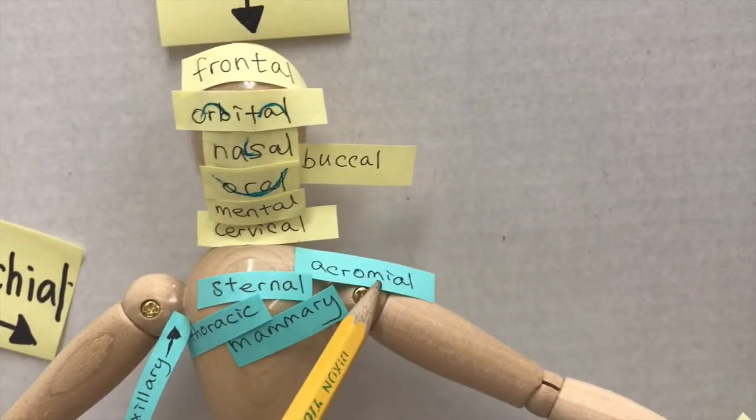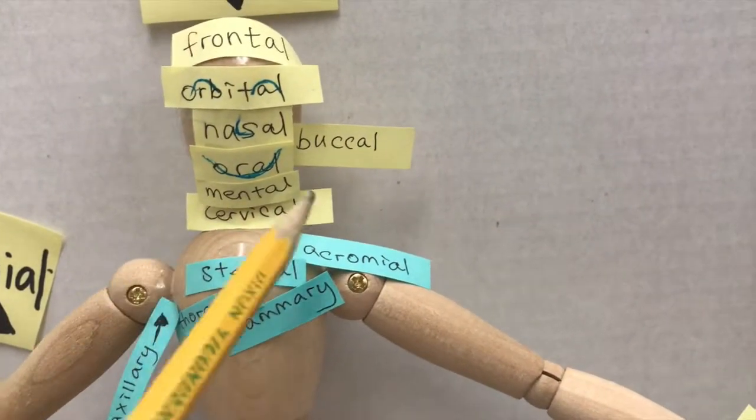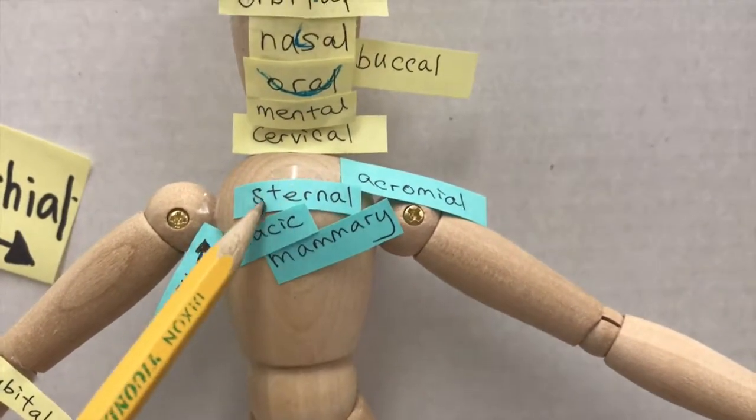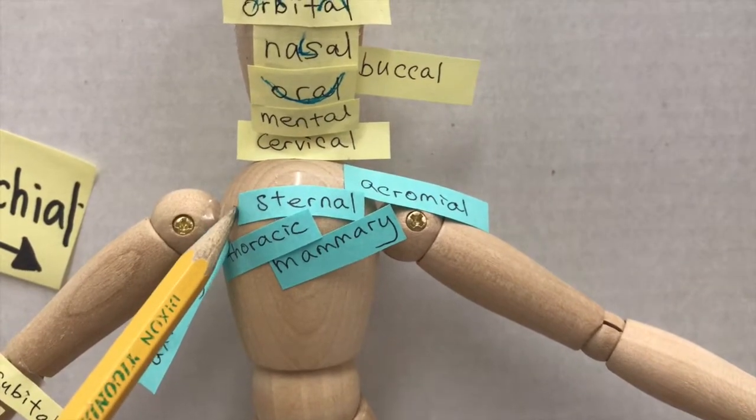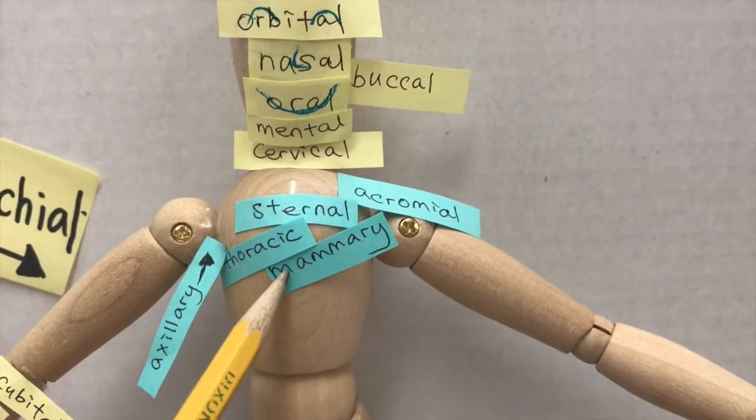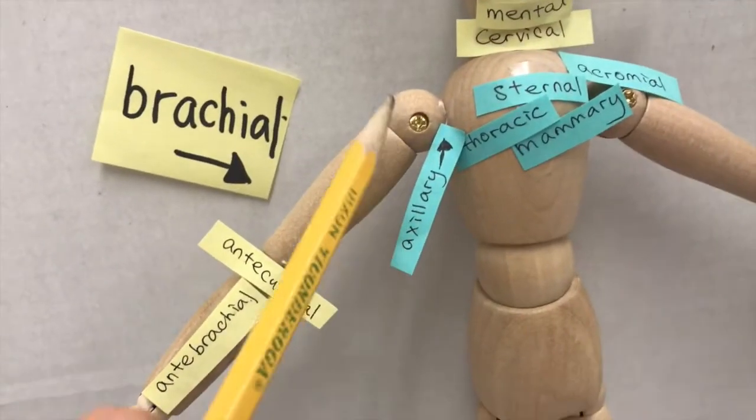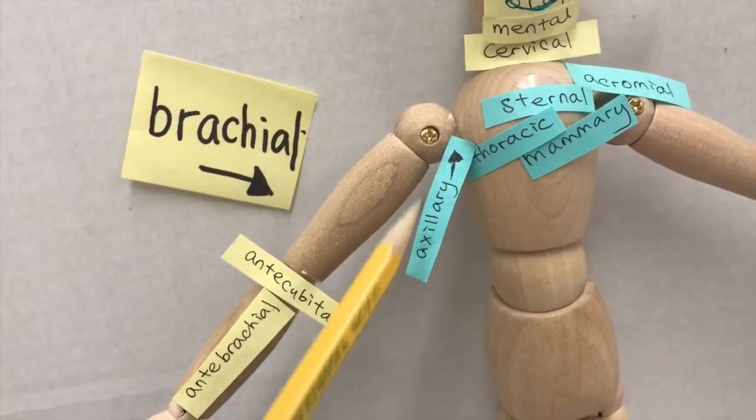And then going down, we have acromial (shoulder), and going into thoracic, which is the chest region. And we have sternal (breastbone) and mammary (breast). And then we have axillary, which is armpit.